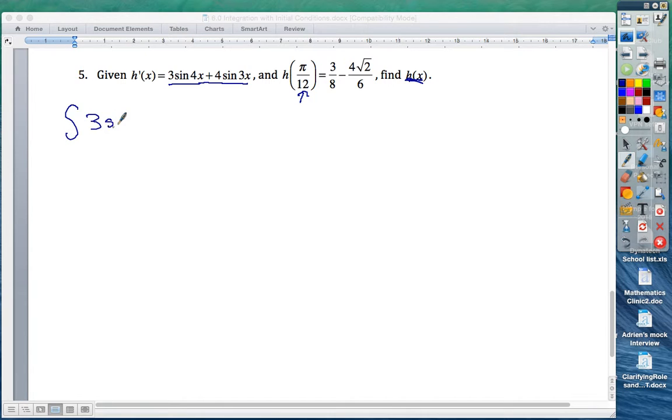So first, we integrate 3 sine of 4x plus 4 sine of 3x. And the nice thing here is that in the formula booklet, you're given the integral of sine is negative cosine.